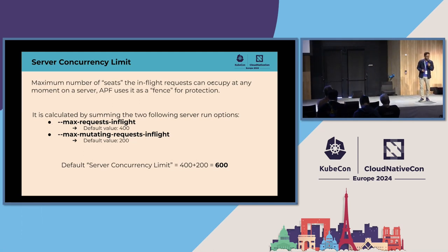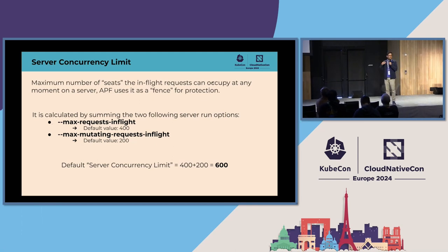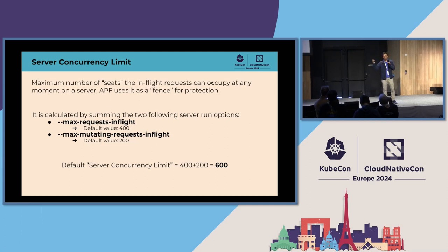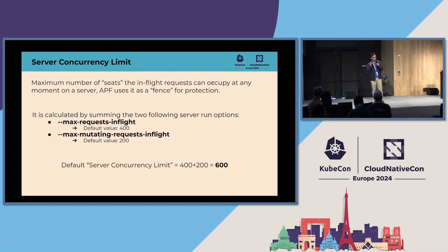Regarding request queue wait time — requests traditionally had a timeout of 30 seconds. We made a recent change: the queue wait time depends on the request timeout. A user can specify timeout in the request parameter. We limit request timeout on the server side to at most 60 seconds for regular requests. The APF queue wait timeout is one-fourth of the request timeout. Previously it was hardcoded at 15 seconds; now it's based on the actual request timeout. If the user doesn't specify a timeout, the server defaults it to 60 seconds, so it'll be 15 seconds for those requests.